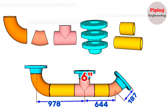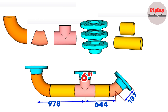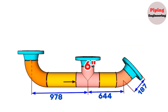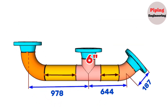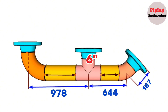Let's calculate the yellow color pipe's length in this pipeline. As you can see, the distances from the center of the 90-degree elbow to the center of the equal T, from the center of the equal T to the center of the 45-degree elbow, and from the center of the 45-degree elbow to the face of the weld neck flange are given.